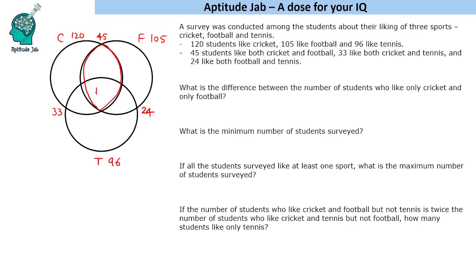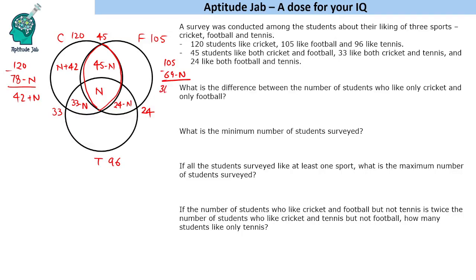Let's say there are n number of people who like all three sports. Then the cricket-football only overlap becomes 45 minus n, cricket-tennis only becomes 33 minus n, and football-tennis only becomes 24 minus n. The total for cricket is 120, so the only-cricket region is 120 minus (78 minus n), which gives n plus 42. Similarly, only football is n plus 36, and only tennis is n plus 39.